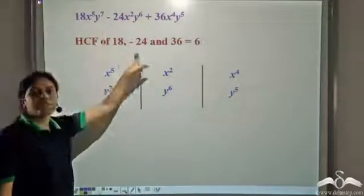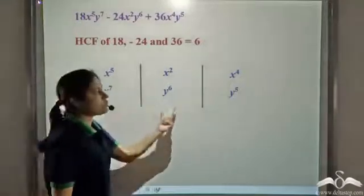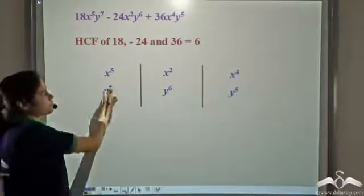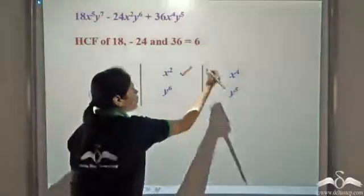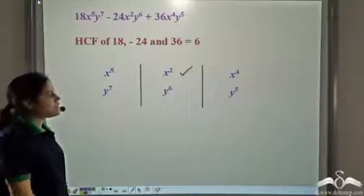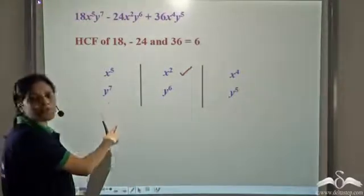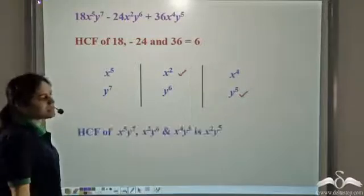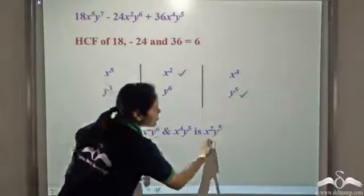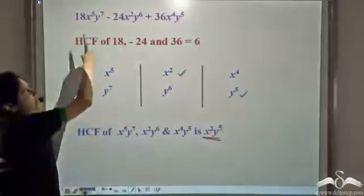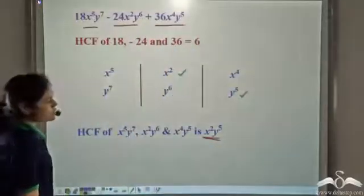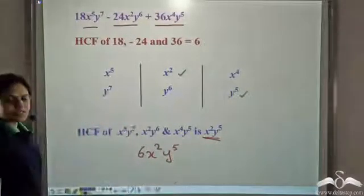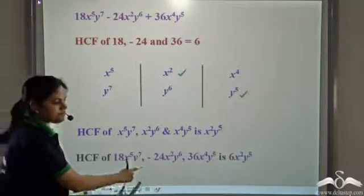Now let us calculate the HCF of the algebraic part. Writing the variables of all three terms in columns, we see what variables are common to all three. x is common to all three terms; we take the lowest power of x, which is x². y is common to all three terms; the lowest power of y is y⁵. So the HCF of the algebraic part is x²y⁵. Therefore the HCF of these three terms is 6x²y⁵.